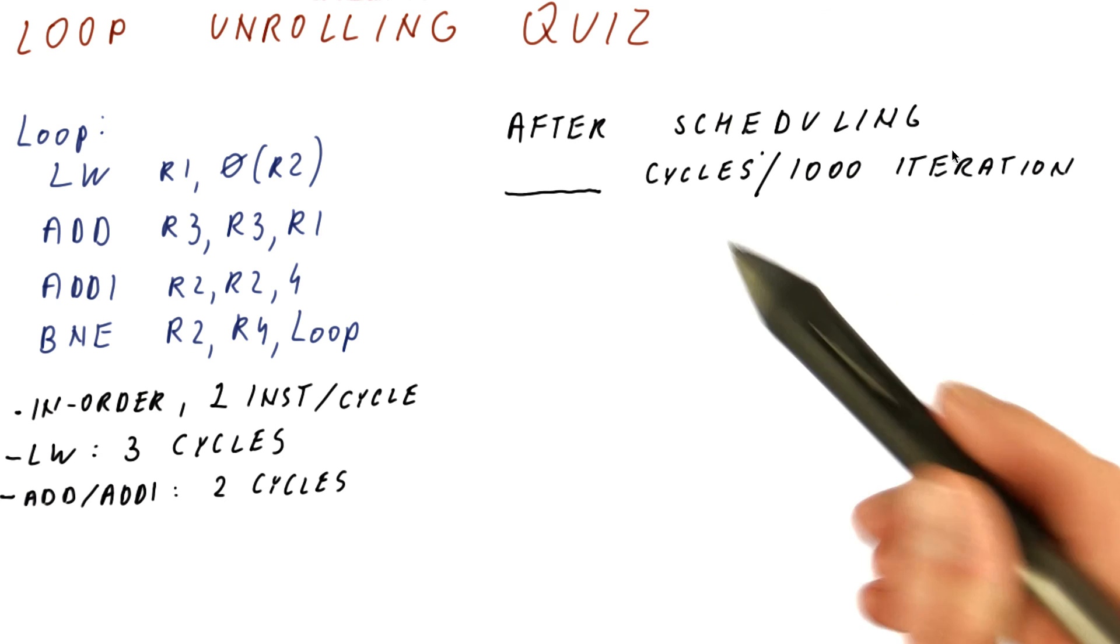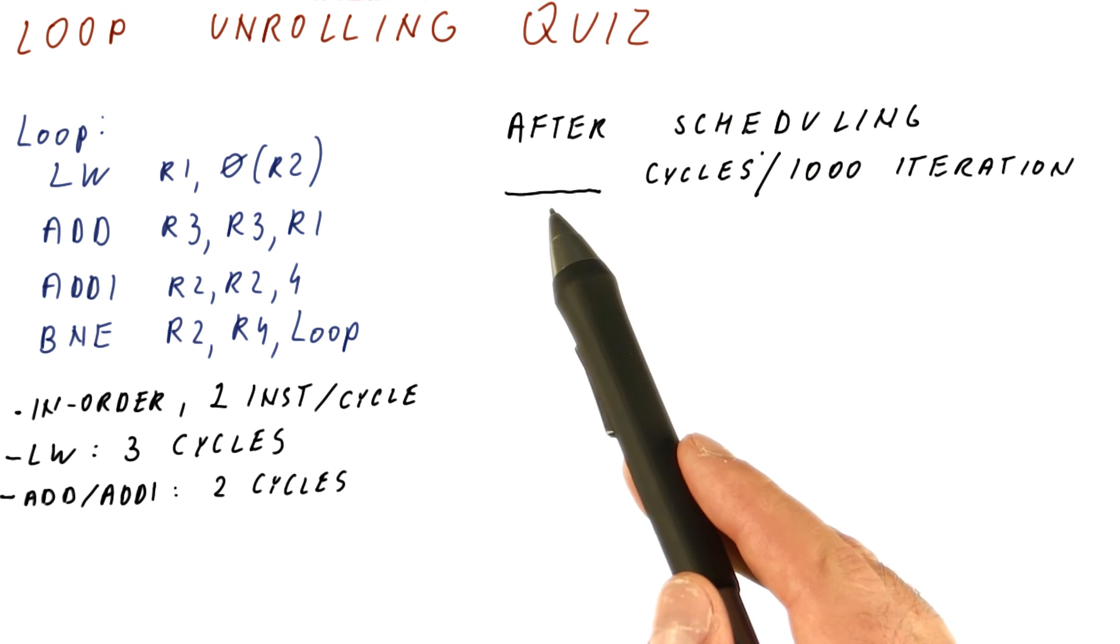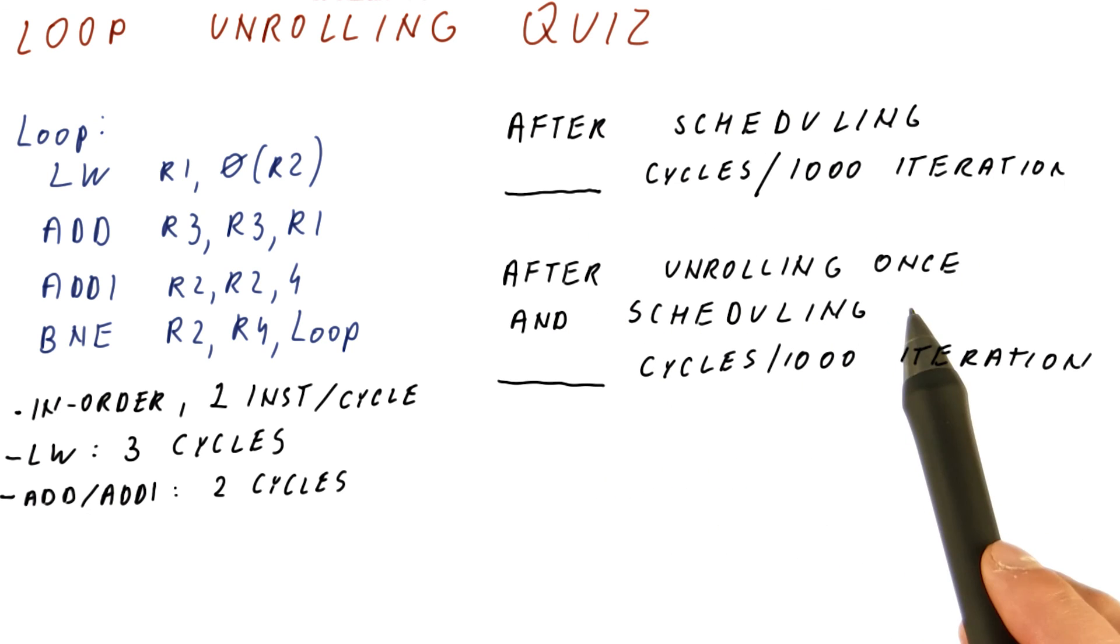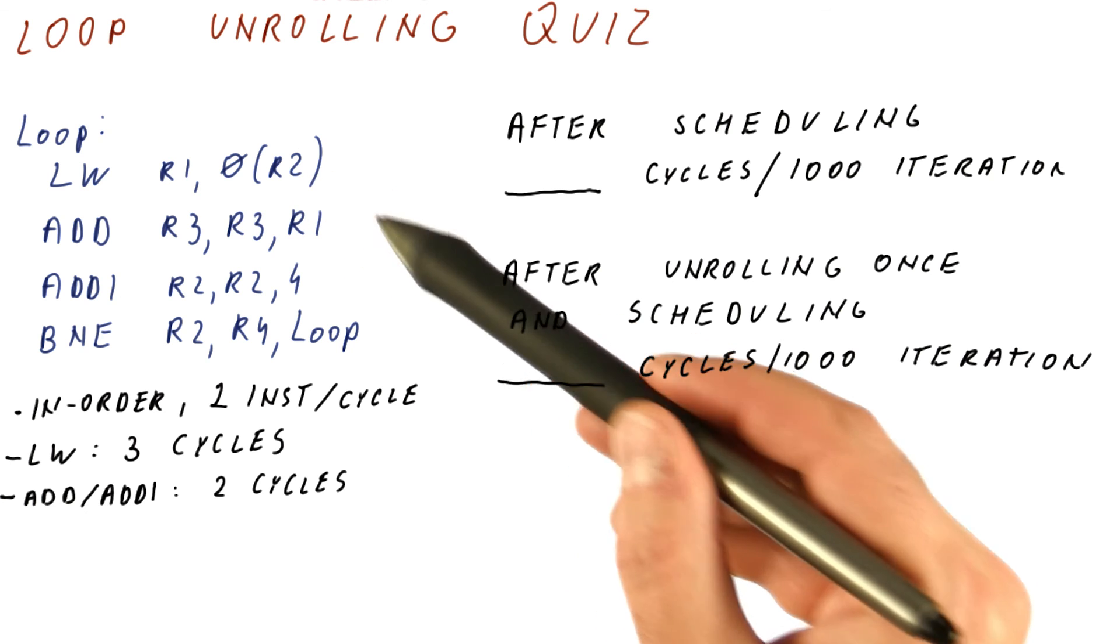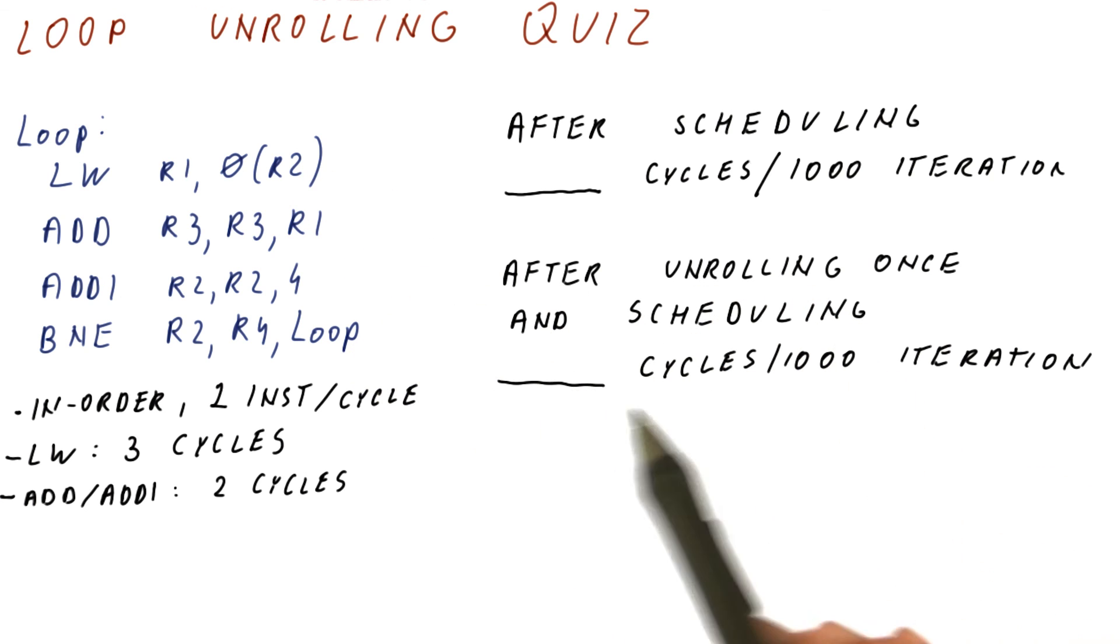So the question for you is: after scheduling this loop but without applying any unrolling, how many cycles does it take to do 1,000 iterations of the loop? And then after unrolling once, meaning we do the work of two of these iterations per new iteration, and then scheduling the loop, how many cycles for 1,000 iterations?